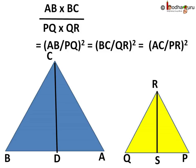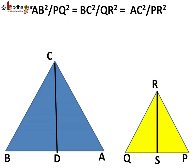How? Because BC by QR is equal to AB by PQ, so we can write AB into AB by PQ into PQ, so it will be AB by PQ whole square. Same way for the other ratios.